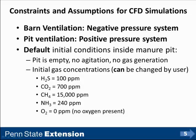The initial gas concentrations in the pit are assumed to be uniform and at a level of 100 parts per million of hydrogen sulfide, 700 parts per million CO2, 50,000 parts per million of methane, 240 parts per million of ammonia, and zero parts per million of oxygen inside the pit. All of the contaminant gas concentrations can be changed by the user; however, the initial oxygen concentration in the pit cannot be changed from zero parts per million.